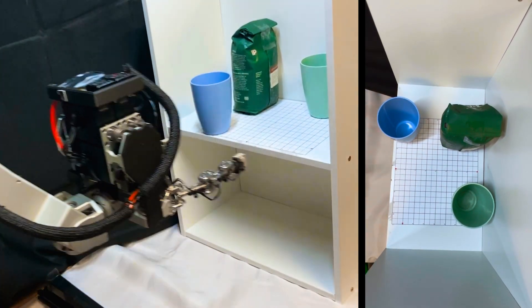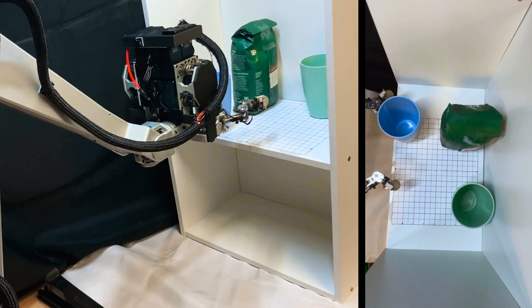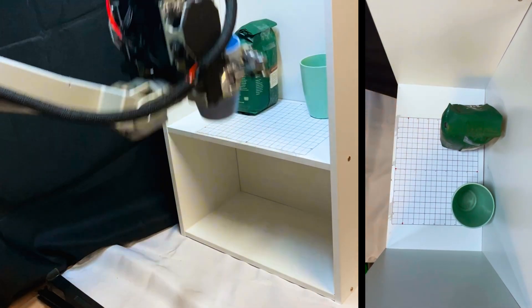And then when it knows that something's in its grasp, it can close and measure the forces that it sees so that it knows whether or not it successfully grasped the object.